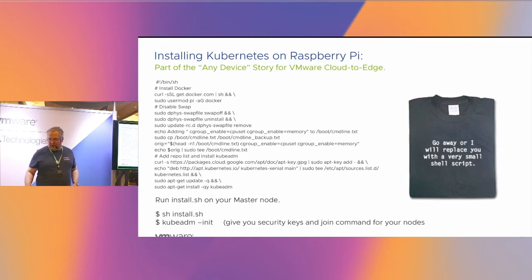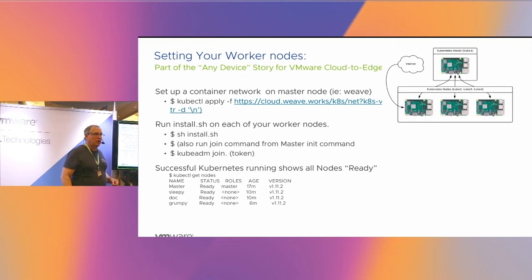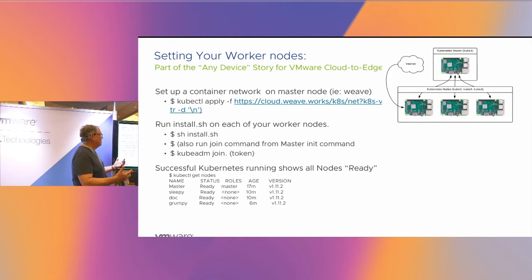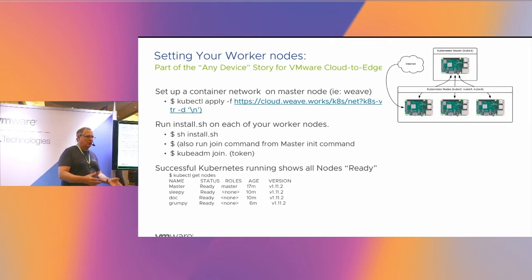There's one more step for the master node. You need a network infrastructure for secure communication from your master node to your worker nodes. VMware has NSX, which is a complicated network environment and we don't run it on ARM. We use Weave — a network interface that allows secure networking from your master to your nodes. You just run kubectl apply -f and pull it right off the net, and now you have a secure network on your Raspberry Pi cluster.